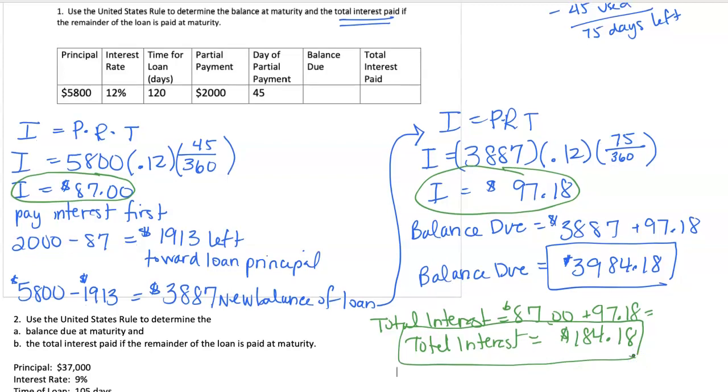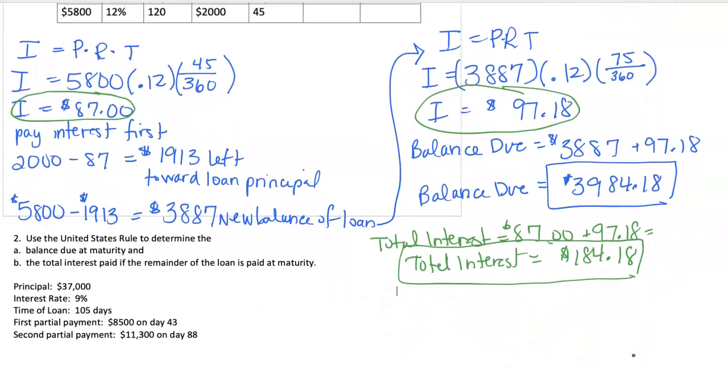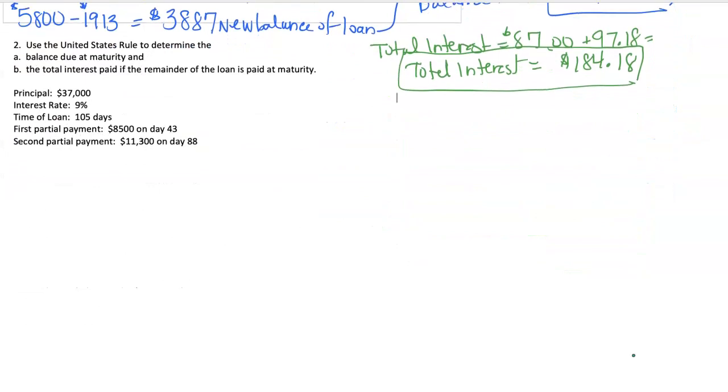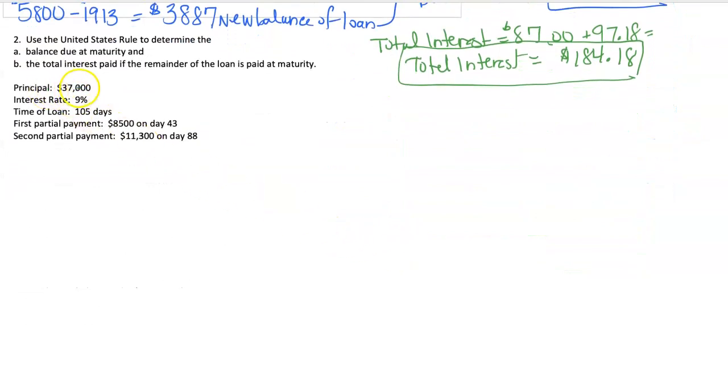Let's try a question similar to that with more than one payment. So question two says we have a principal of $37,000 and interest rate of 9%. The whole loan is 105 days and we're going to make two partial payments. Okay, so let's start I equals PRT. Start with that loan of $37,000 for our principal, our rate of 9%.